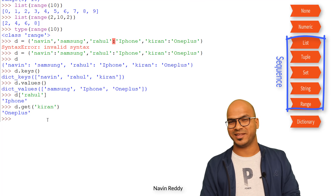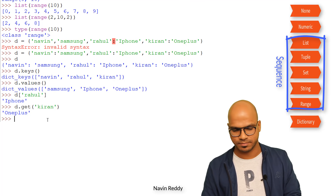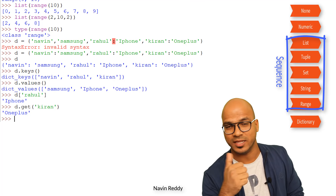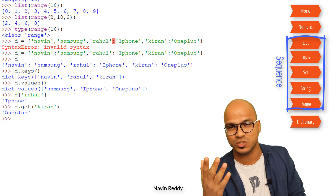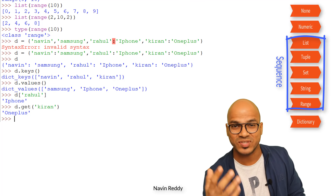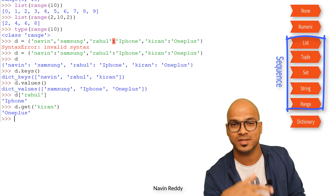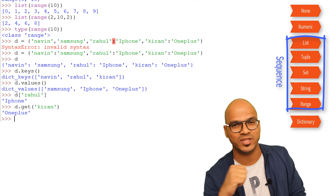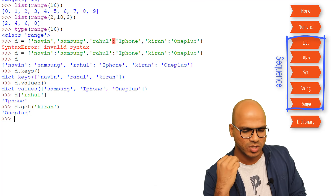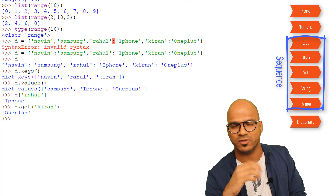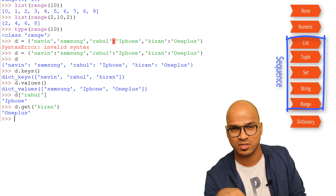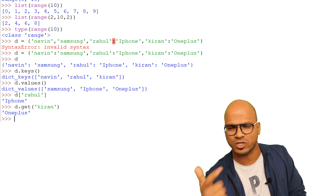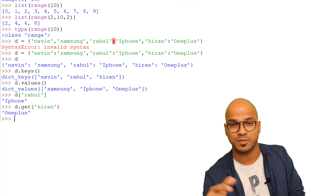That's how you work with data types. To summarize — we have None, numeric types, sequence types (list, range, set, tuple), and mapping with dictionary. I hope it makes sense. If you have any questions, let me know in the comment section, and click the like button if you're enjoying this session.